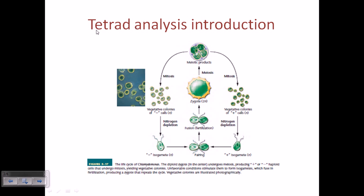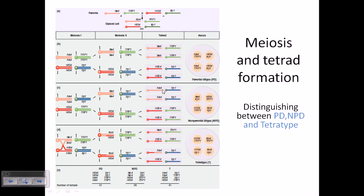So what is a tetrad? A tetrad is a form of chromosome that is being formed during cell division and the formation of gametes — during meiosis, during the formation of gametes.